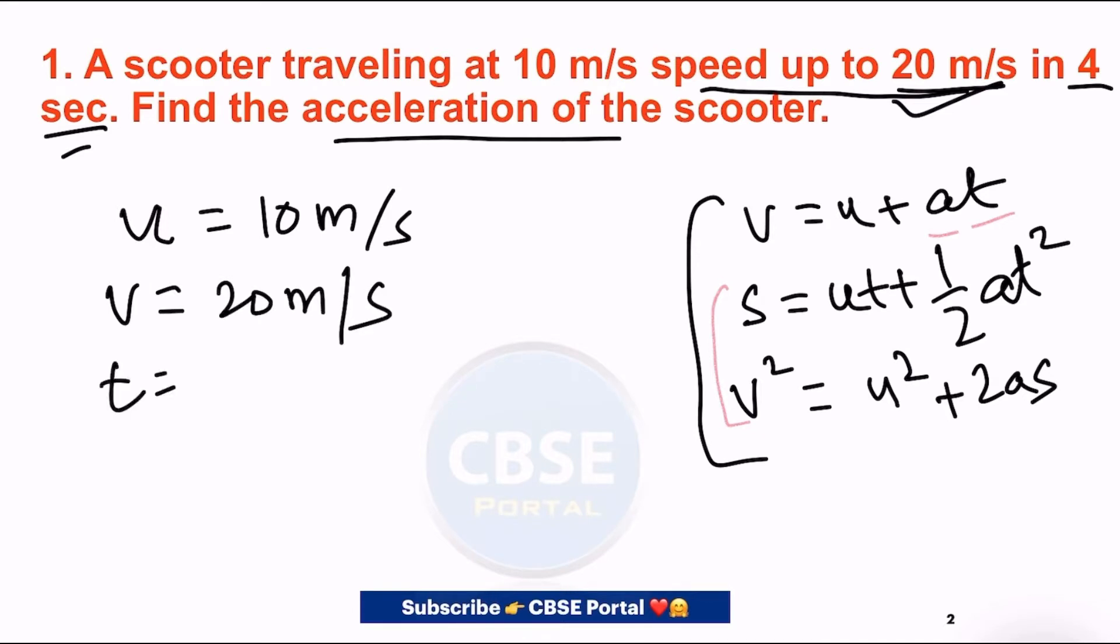Time t is four seconds. The question asks to find the acceleration of the scooter, that is a. Here the initial velocity is given, final velocity is given, time is given, and you have to find acceleration. In the first equation of motion, there are 4 unknowns: v, u, a, and t. Three are already given, so the fourth, acceleration, can be easily calculated.